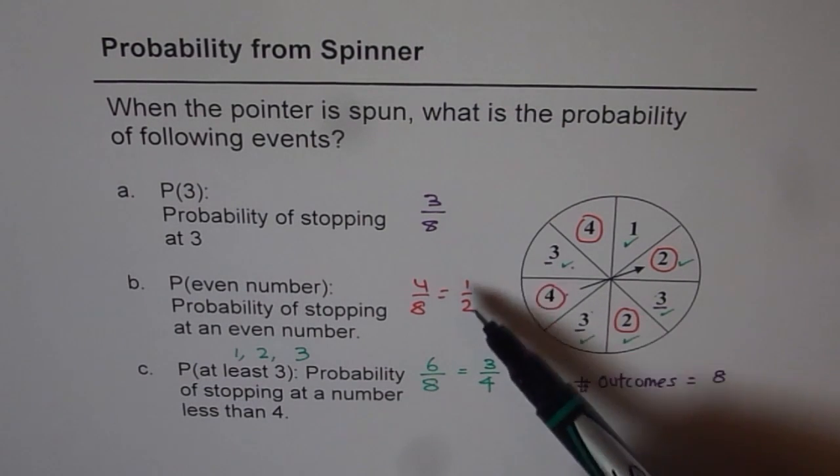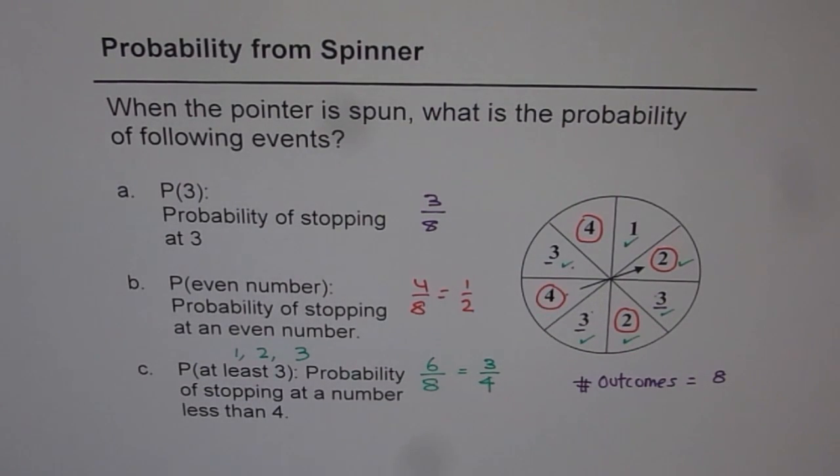So you can always multiply these fractions by 100 and write probability in percent also. So I leave that for you to do. So write them as percent also. I hope you understand and appreciate the way we have solved this question. Thank you.